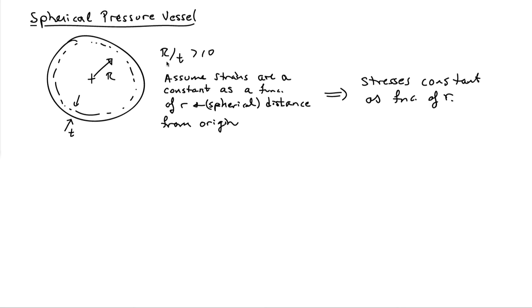Namely that the radial diameter of the pressure vessel in relationship to the wall thickness is greater than 10. That allows us to assume that the strains are constant as a function of R through the thickness of the pressure vessel. So R is now the spherical distance out from the origin.